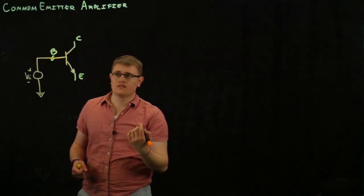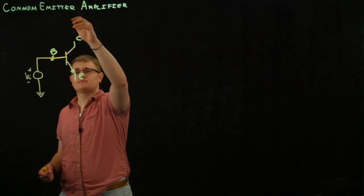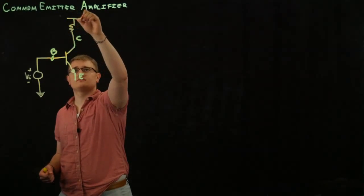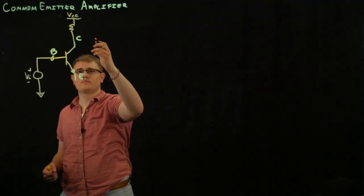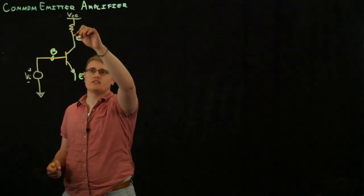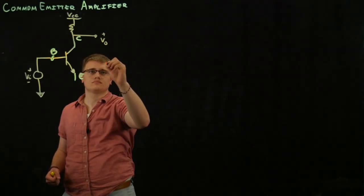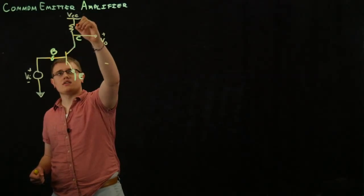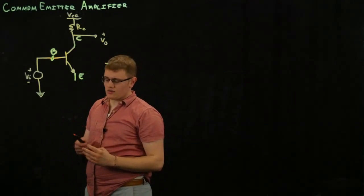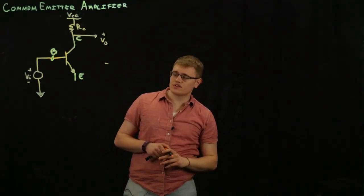Our collector is going to be connected to a resistance, source voltage, and we're going to measure our output here. And this will be our collector resistance, RC. Our emitter is going to be connected to ground.